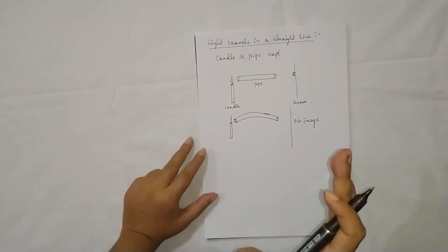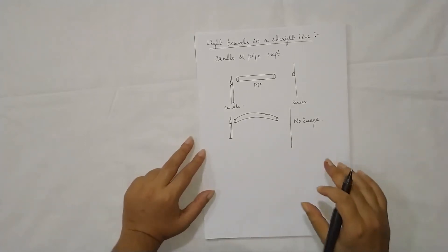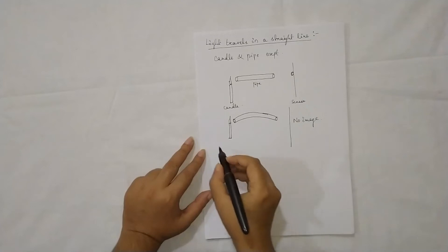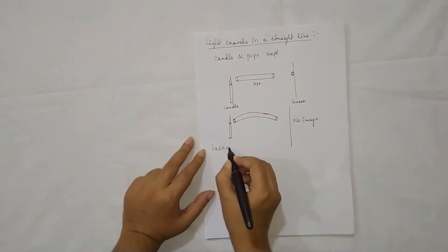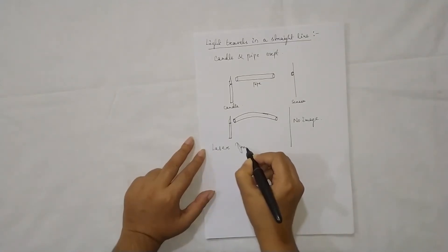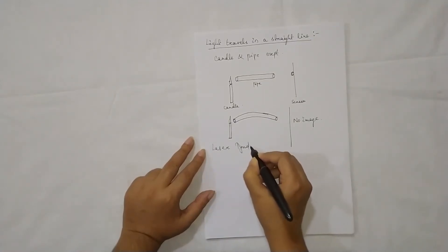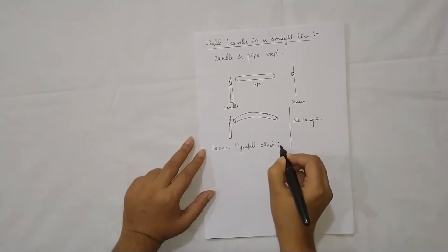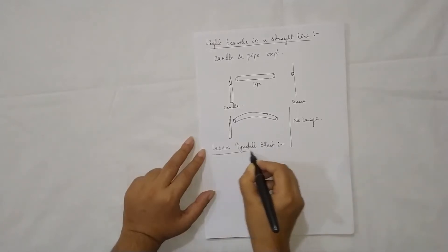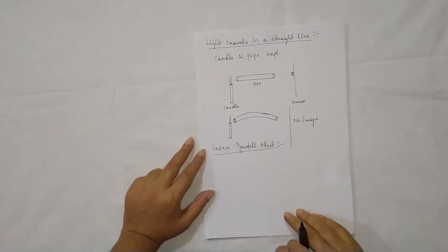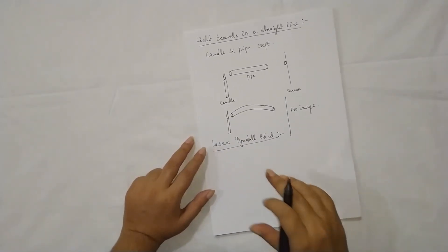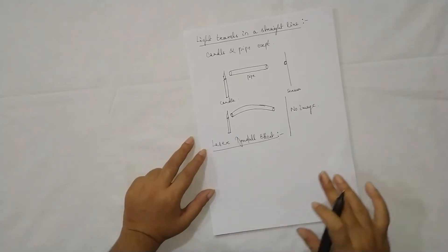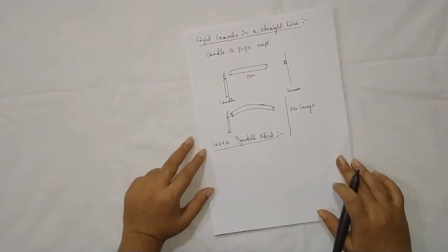To see how the light travels in a straight line, we are going to use the laser Tyndall effect. By using this effect, we are going to see the light traveling. But before going to the laser Tyndall effect, let us first understand what the Tyndall effect is.